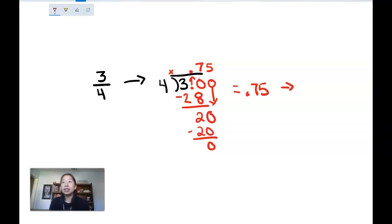So I get 0.75, and if I want to change this to a percent, I move it two times to the right. So my decimal now becomes 75%. So 3/4 equals 0.75, which also equals 75%.